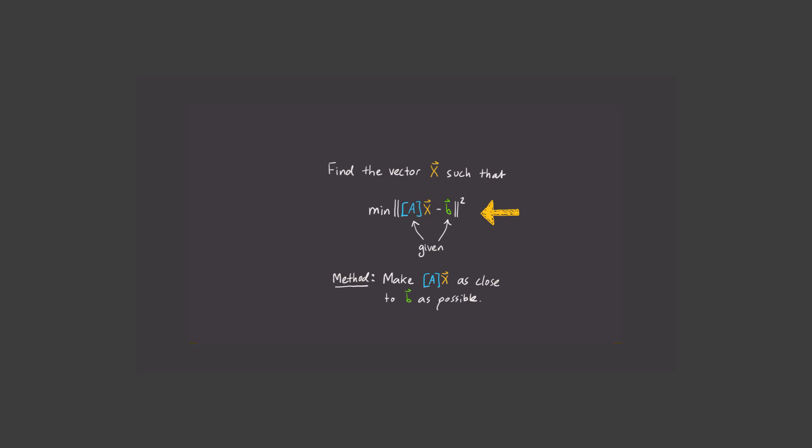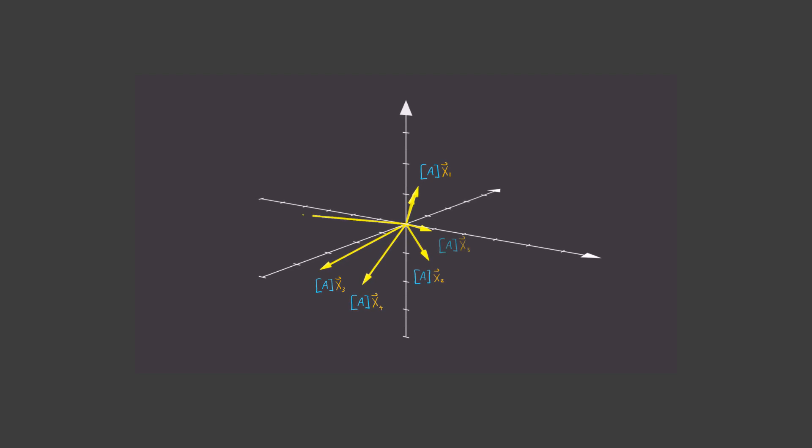Okay, so how do we find the best x? Well, one way is to brute force it. We can guess a random value of x, called x1, and plot the vector Ax1 here. Another guess could be Ax2. Another could be Ax3, Ax4, Ax5, etc.